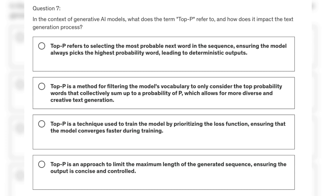We have four options. Option A: top P refers to selecting the most probable next word in the sequence, ensuring the model always picks the highest probability word, leading to deterministic outputs. Option B: top P is a method for filtering the model's vocabulary to only consider the top probability words that collectively sum up to a probability of P, which allows for more diverse and creative text generation. Option C: top P is a technique used to train the model by prioritizing the loss function, ensuring that the model converges faster during training. Option D: top P is an approach to limit the maximum length of the generated sequence, ensuring the output is concise and controlled.